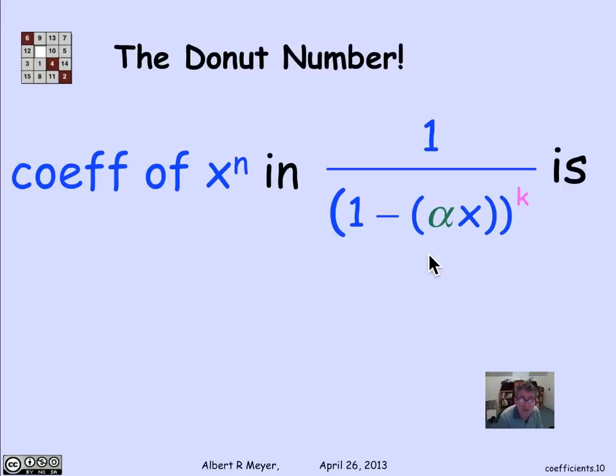Now, one more case that we're going to need that's worth considering is suppose that I replace x by alpha x in this generating function. So the coefficient of x to the n was this (n plus k minus 1) choose n. Now, when I replace x by alpha x, the binomial coefficient part of the coefficient doesn't change.